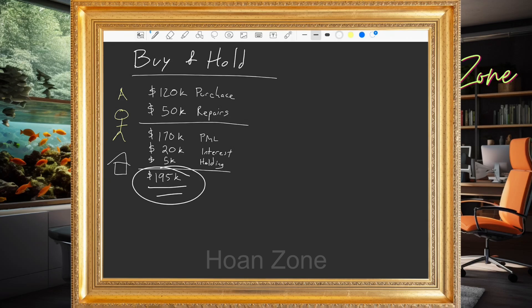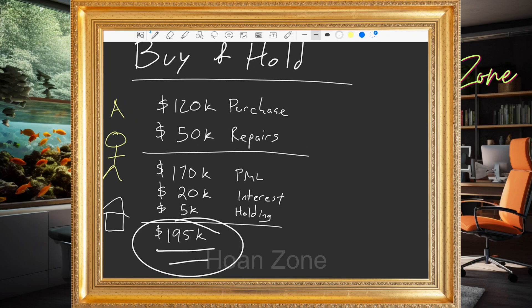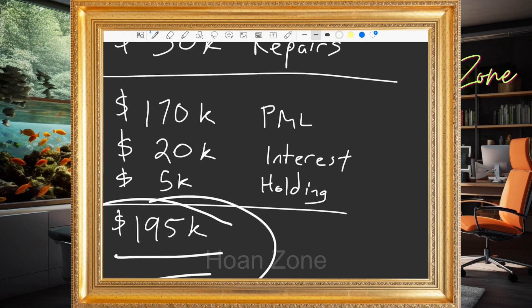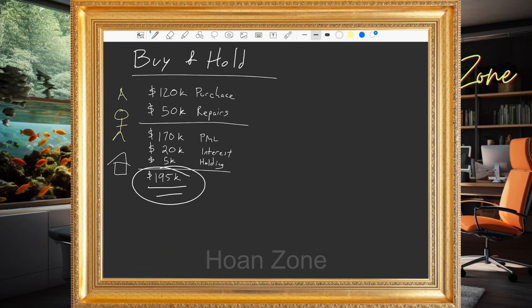Our next example is the buy and hold. Let's say buyer A, instead of buying to flip, decided to buy this as a rental. Let's keep everything the same — purchase price, rehab, private money lender, $20,000 in interest, $5,000 in holding costs — all the same. The only difference is that instead of selling the property, he is going to rent it out. Let's say the rent is $2,000 a month.